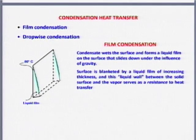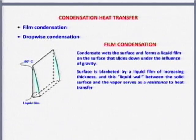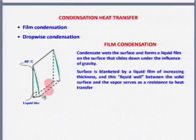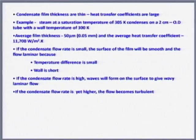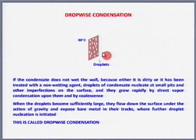There are two types of condensation: film condensation and dropwise condensation. Typically, whatever you see on a coke bottle taken out from a refrigerator and kept outside — that is dropwise condensation. You do not see a film; you see dropwise condensation. There are droplets all over the place, as you see on a coke bottle.